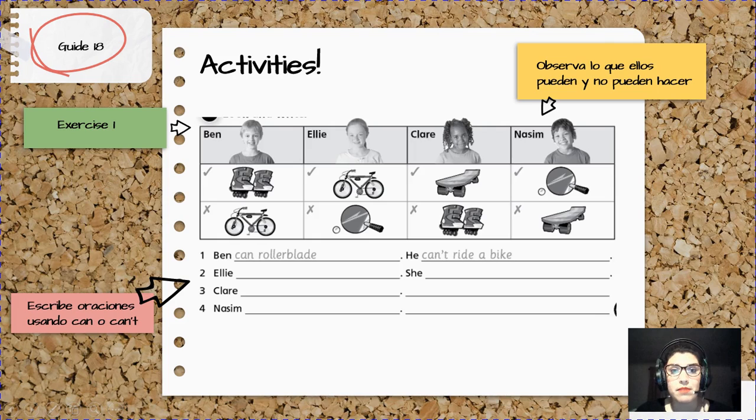En exercise number one, ¿qué tenemos que hacer? Primero, observar lo que ven el clima si pueden y no pueden hacer. Tenemos ahí con un tick lo que sí pueden hacer y una X lo que no pueden hacer. Luego, vamos a escribir oraciones utilizando can or can't, según si puedan o no pueden hacer. Les damos el ejemplo. Ben can rollerblade. Sí puede hacerlo, tiene un tick. He can't ride a bike. Él no puede andar en bicicleta. Tienes que hacer lo mismo con Ellie, con Claire y con Noelia.